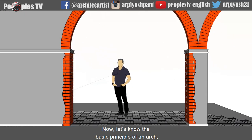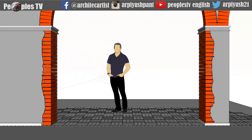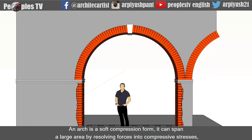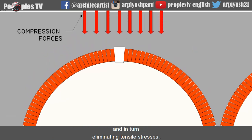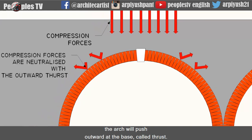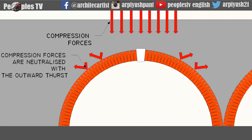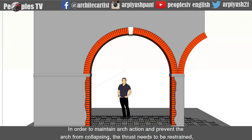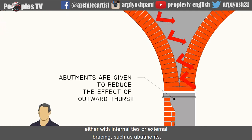Now let's know the basic principle of an arch — how the load is transferred to the ground, due to which it can span large areas. An arch is a pure compression form. It can span a large area by resolving forces into compressive stresses and in turn eliminating tensile stresses. This is sometimes referred to as arch action. As the forces in the arch are carried to the ground, the arch will push outward at the base, called thrust. As the rise or height of the arch decreases, the outward thrust increases. To maintain arch action and prevent the arch from collapsing, the thrust needs to be restrained, either with internal ties or external bracings such as abutments.